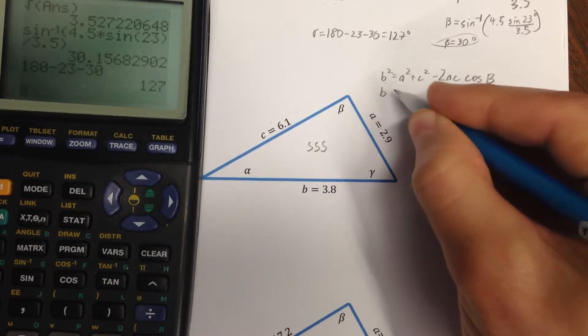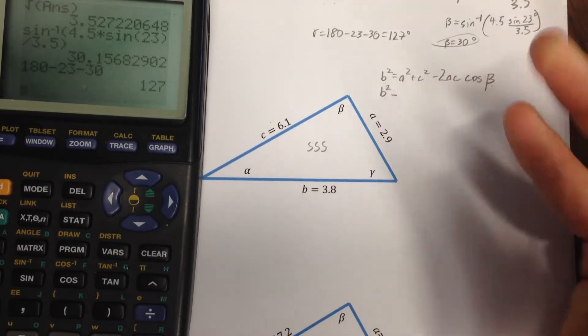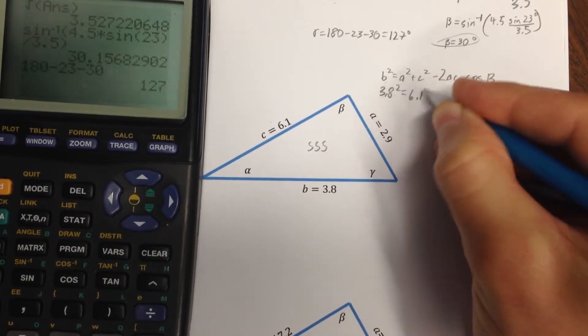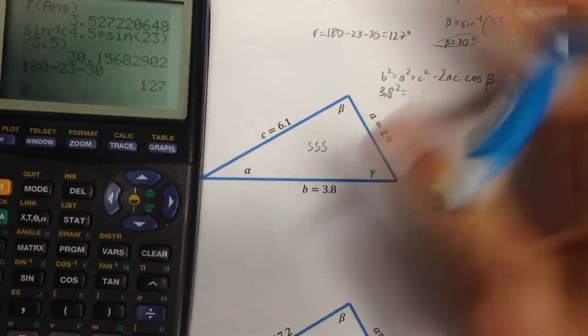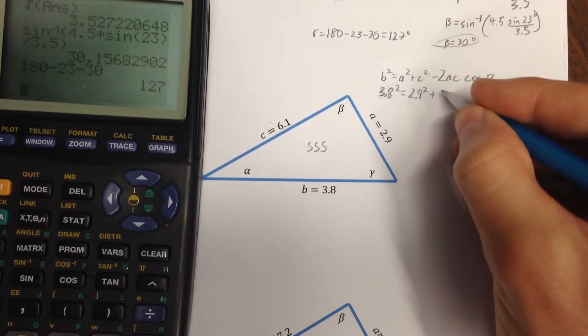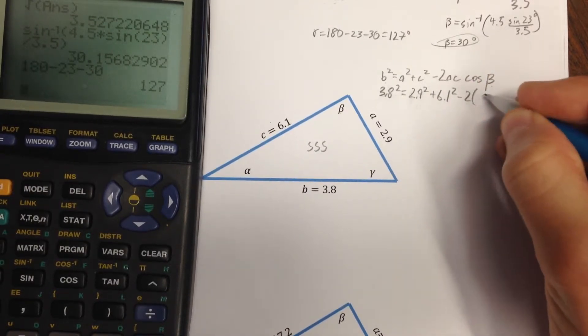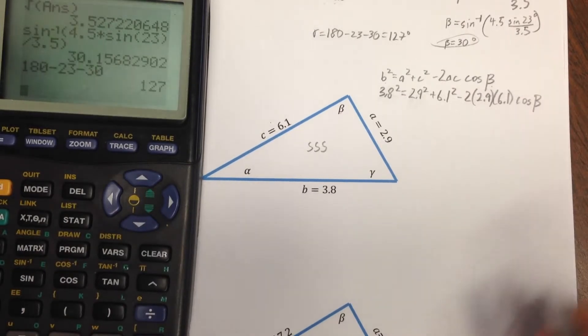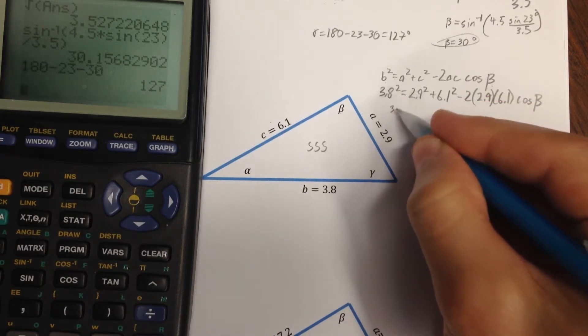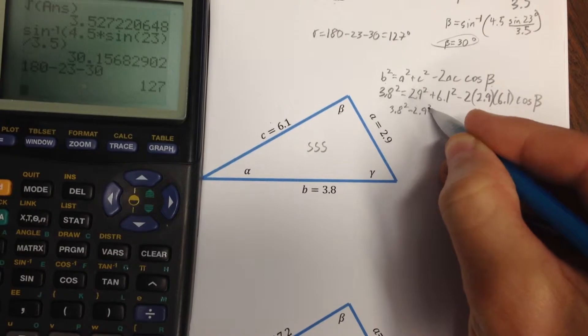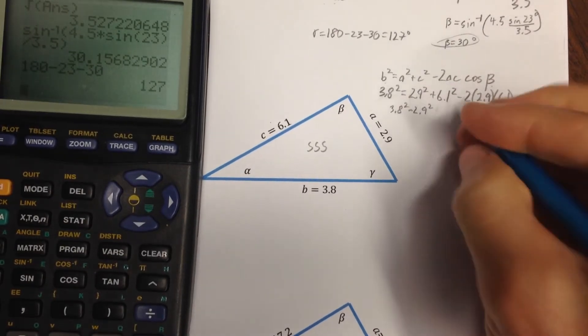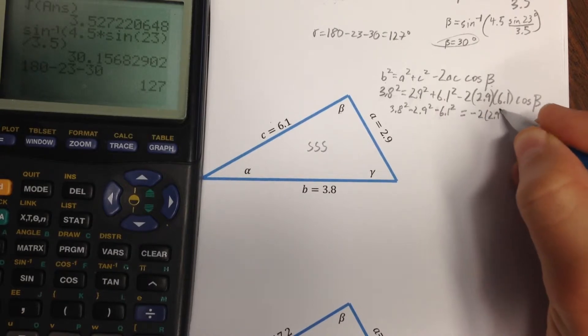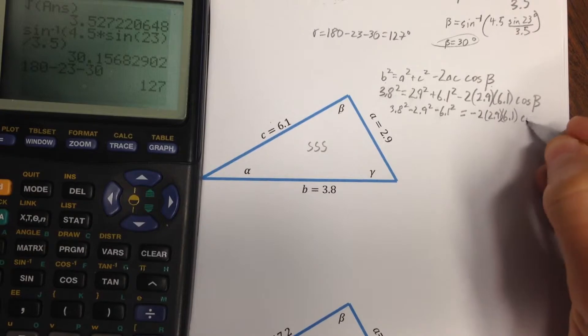b squared, and I guess I have that side, so I'll go ahead and plug it in. Let's see, so, 3.8 squared equals 6.1, oops, that's not a, I guess I should pay closer attention. 2.9 squared plus 6.1 squared minus 2 times 2.9 times 6.1 times the cosine of beta. Now, I'm going to subtract these two quantities to the other side, so 3.8 squared minus 2.9 squared plus, oops, I've got to subtract it, minus 6.1 squared.